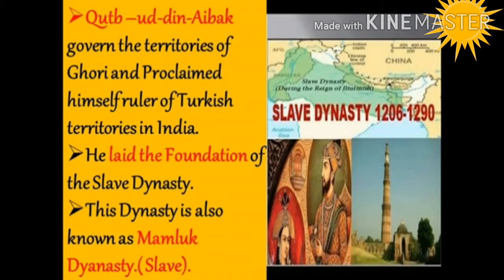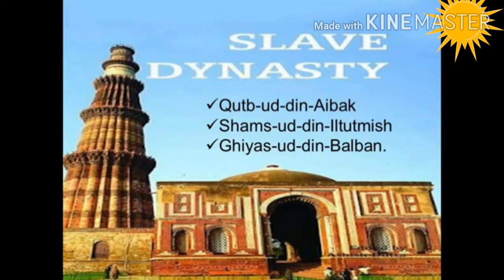Mamluk is an Arabic word meaning 'slave.' The three great sultans of this Slave dynasty were Qutbuddin Aibak, Shamsuddin Iltutmish, and Giyasuddin Balban. The Slave dynasty ruled over the subcontinent for about 84 years.